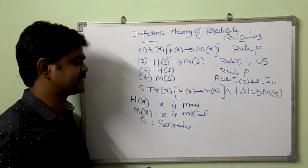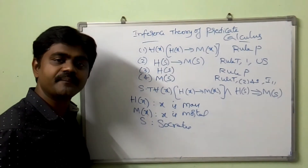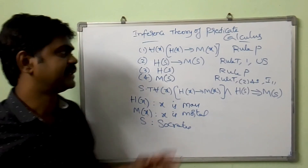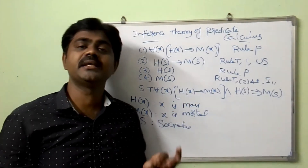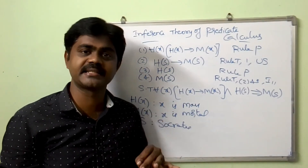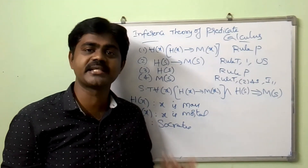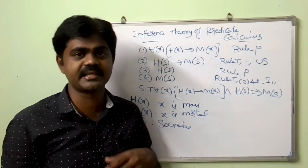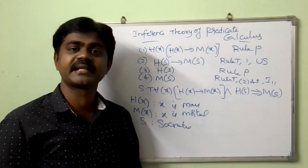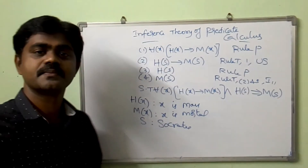So I will get M(S). My final conclusion: M(S) is verified — x is mortal, that is, Socrates is mortal. So in this way, I am using universal specification and existential specification, existential generalization to solve this type of problem. If you see another example, you will get a clearer understanding about this.